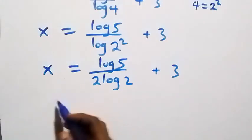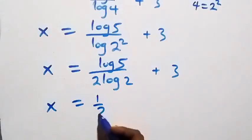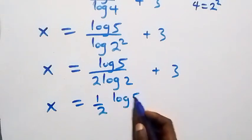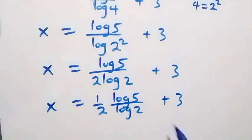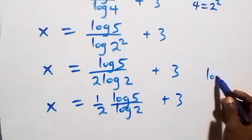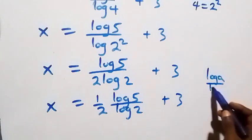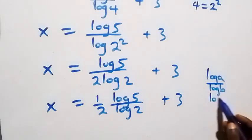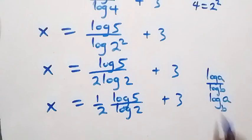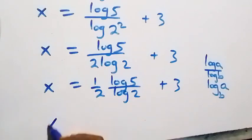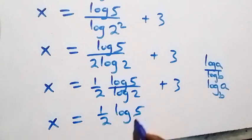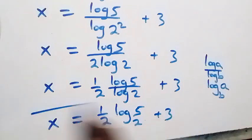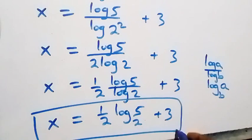We can write this as x equals log 5 over log 2, all times one half, plus 3. Applying the change of base rule — where log a over log b equals log a to base b — we get x equals one half times log 5 to base 2, plus 3.